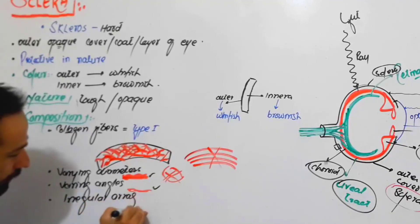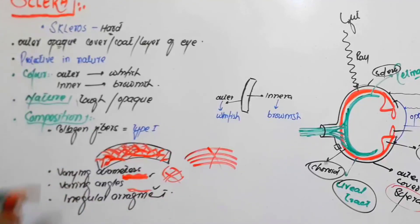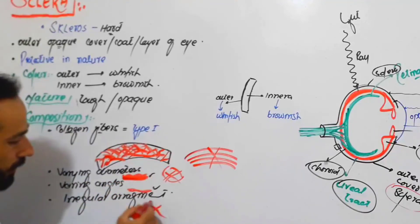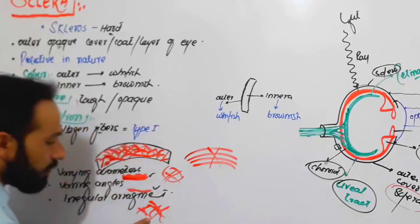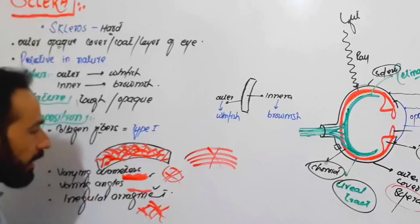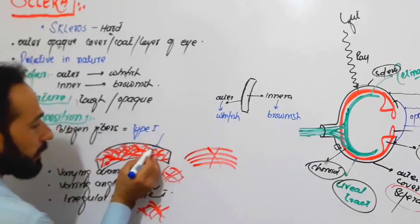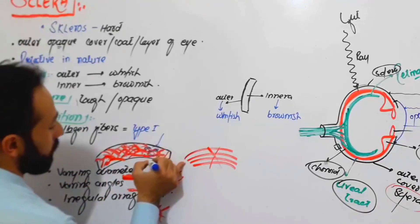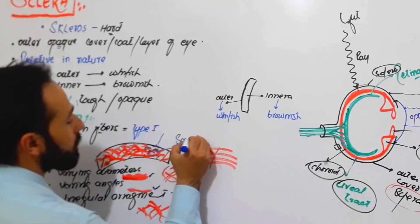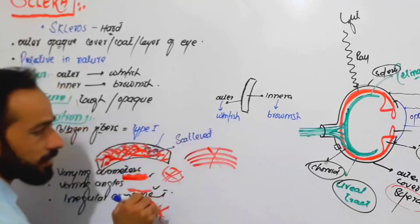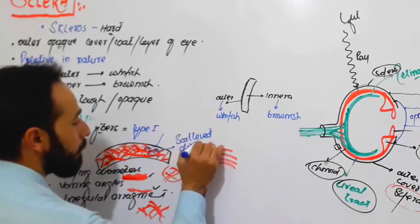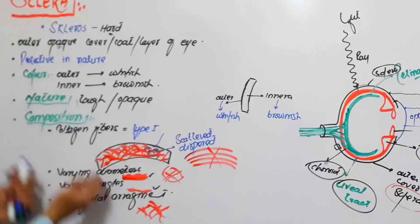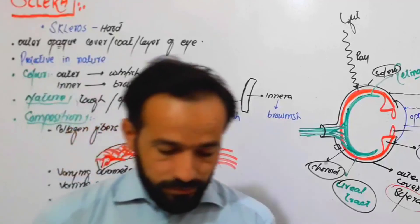The sclera is composed of type one collagen fibers — some thick, some thin — with varying angles and irregular arrangement. Because of this irregular arrangement, the sclera is opaque. When light falls on the sclera, it is not refracted or passed through; instead, light is scattered and dispersed within the sclera due to the arrangement of these collagen fibers.